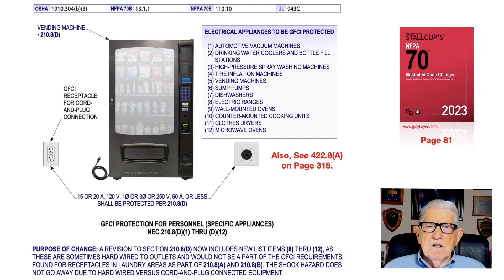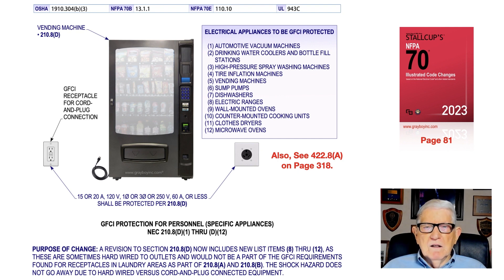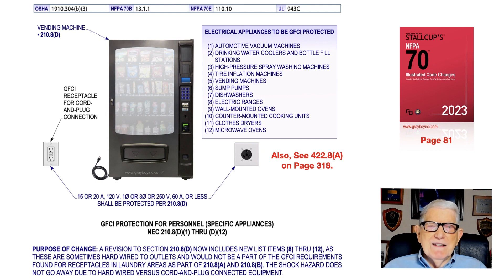This illustration shows a vending machine with a GFCI receptacle for cord and plug connected equipment. If it's not a receptacle, then a circuit breaker with the GFCI protection scheme would be used. This section deals with GFCI protection for personnel for specific appliances in accordance with 210.8 D1 through D12 — that is 210.8 D on page 81, which is the purpose of this change in the 2023 edition of the NEC.